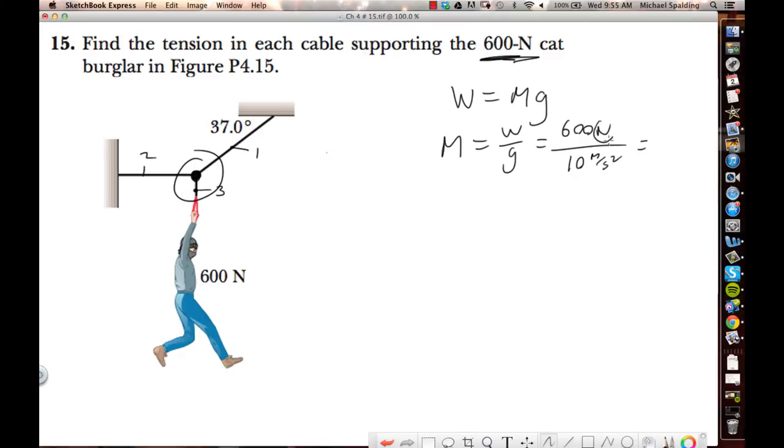So this comes out. Now look, what's a Newton? A Newton is a kilogram meter per second squared. So the meter per second squared cancels, and you get 60 kilograms. That's the mass of the cat burglar.